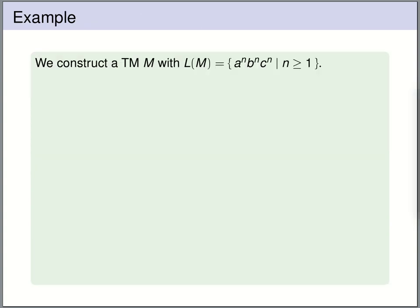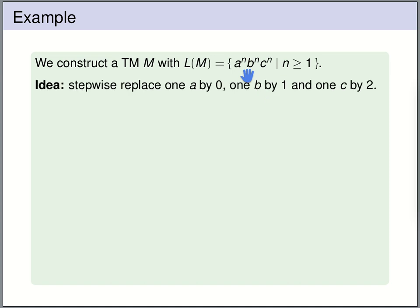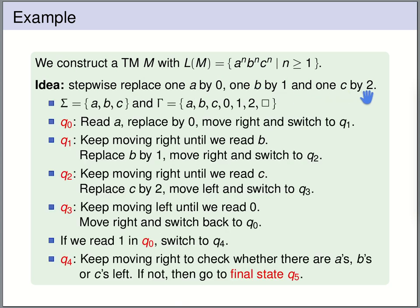Let's construct a Turing machine that accepts the language {a^n b^n c^n | n ≥ 1}. We have already shown this language is not context-free, so constructing a Turing machine for it demonstrates that Turing machines can accept languages that are not context-free. The idea is: we walk over the input word and each time replace one a by 0, one b by 1, and one c by 2. We use input alphabet {a, b, c} and tape alphabet {a, b, c, 0, 1, 2, blank}.